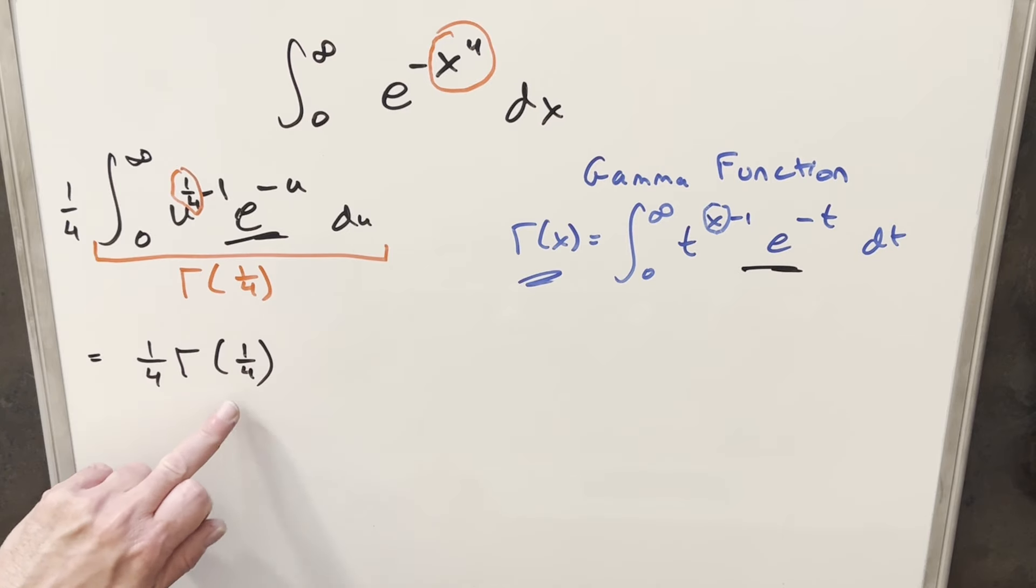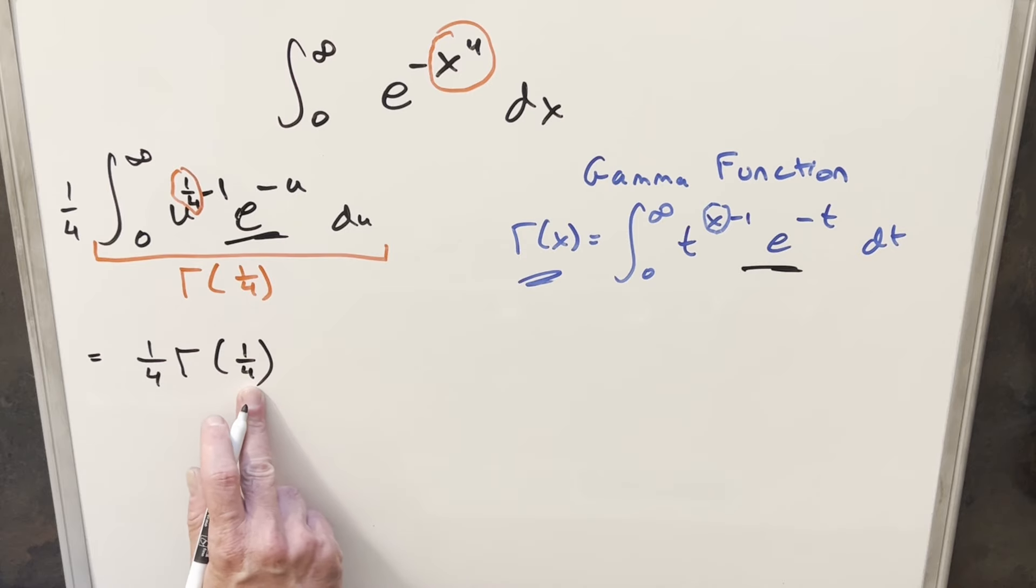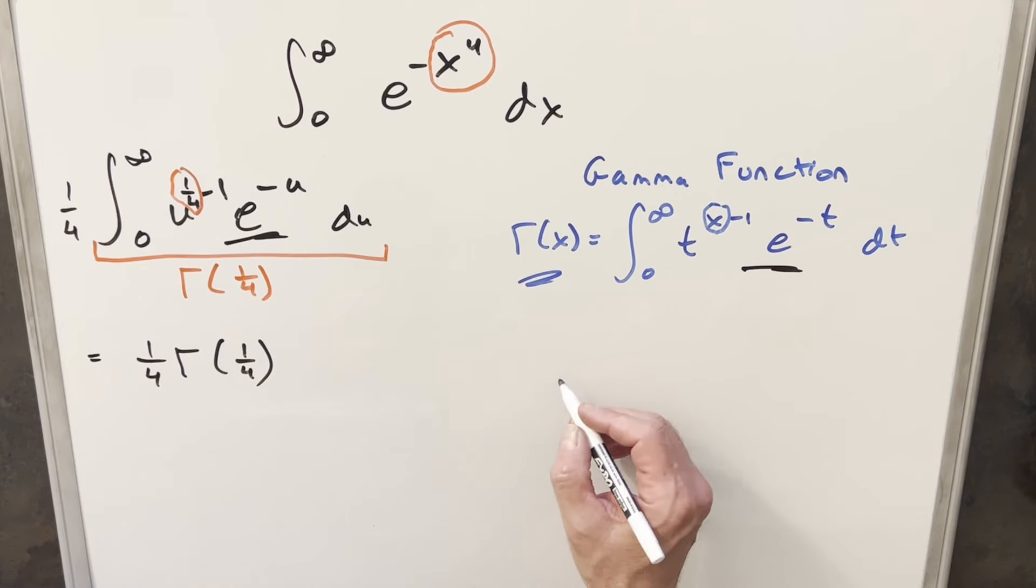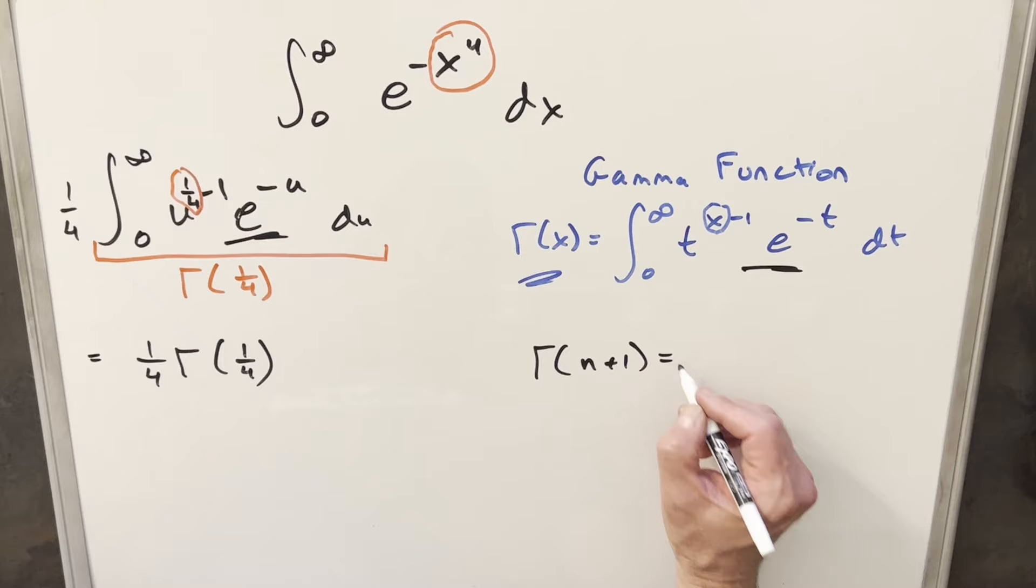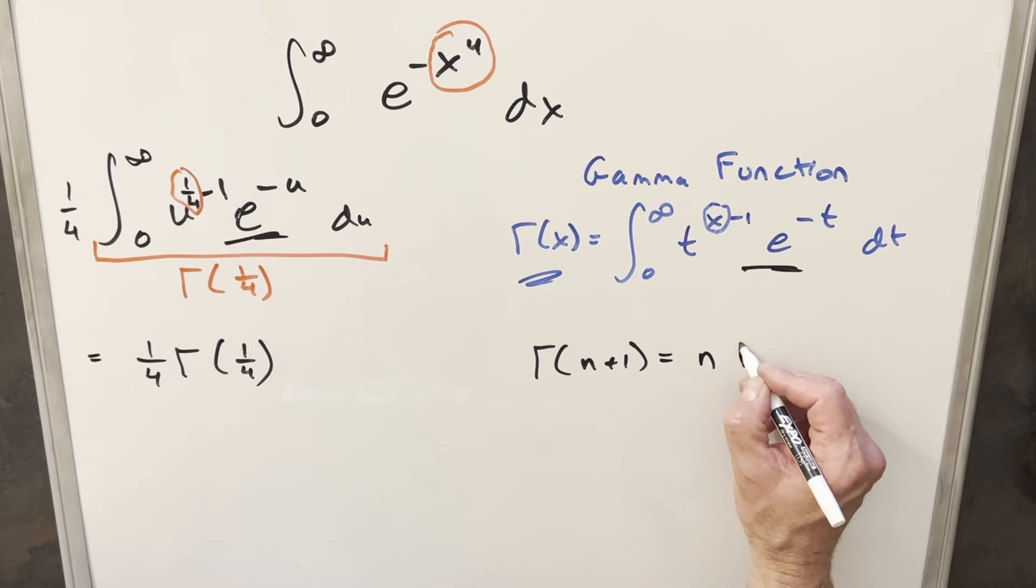Now it's not that easy to get a nice value for gamma of 1/4th. If we had something else, we might be able to work with it using Euler's reflection. If we had a half here, we could do that. But with 1/4th, it's kind of a problem. But one thing we can do is actually use this formula that relates to the factorial where we can say for gamma of n plus 1, this is going to be the same thing as n times gamma of n.